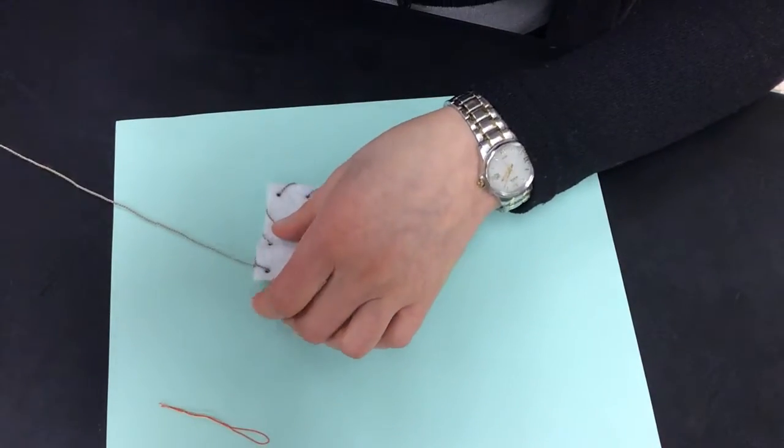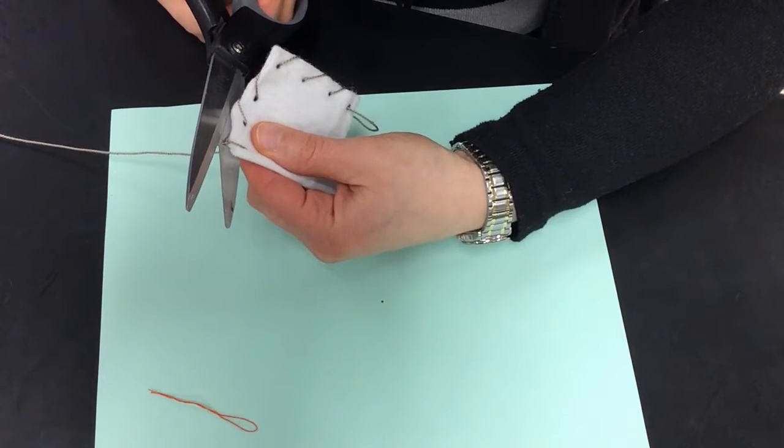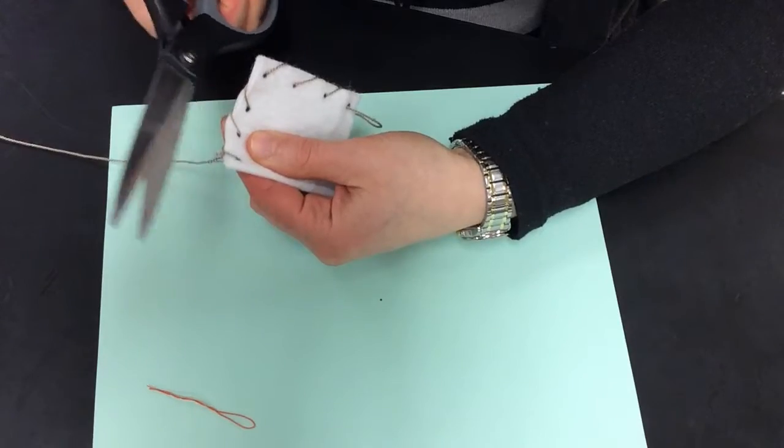And then once I have made that knot, then I can take my scissors and cut this off. But you want to make sure that knot is nice and secure before you cut it, because otherwise you will end up having to sew the whole thing through again.